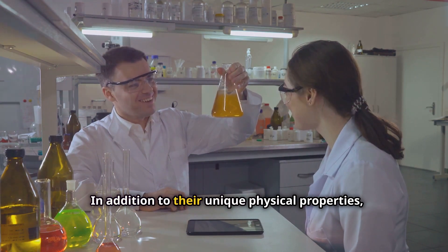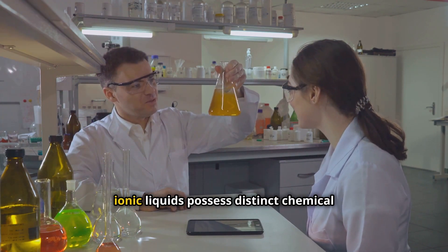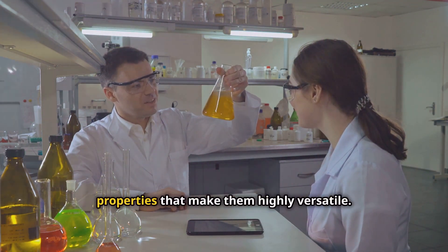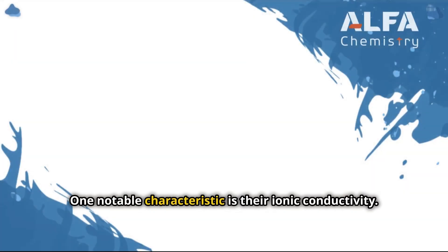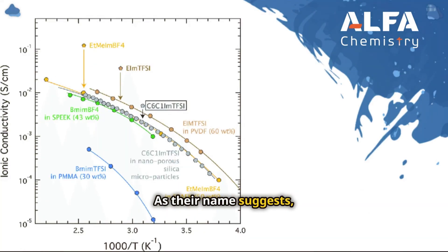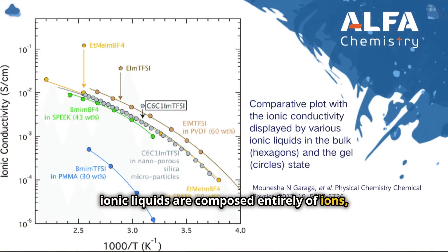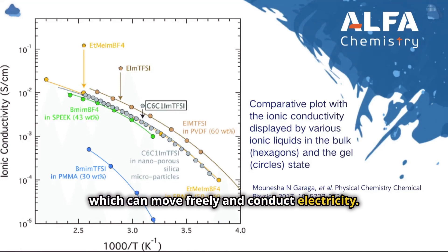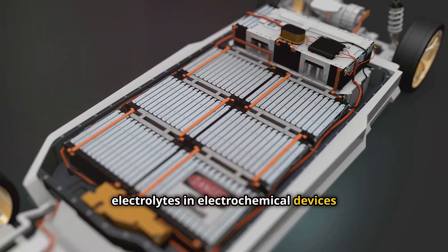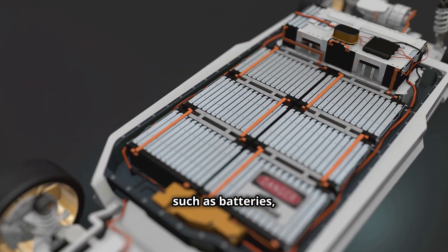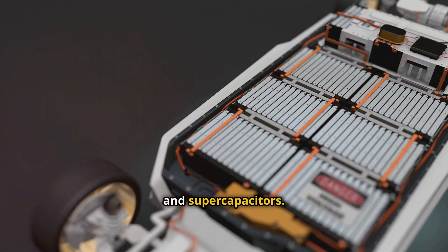In addition to their unique physical properties, ionic liquids possess distinct chemical properties that make them highly versatile. One notable characteristic is their ionic conductivity. As their name suggests, ionic liquids are composed entirely of ions, which can move freely and conduct electricity. This property makes them suitable as electrolytes in electrochemical devices such as batteries, fuel cells, and supercapacitors.